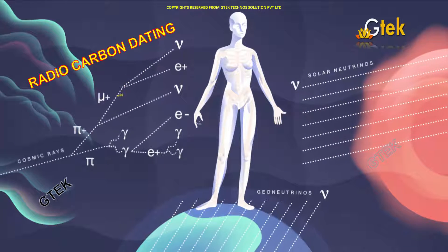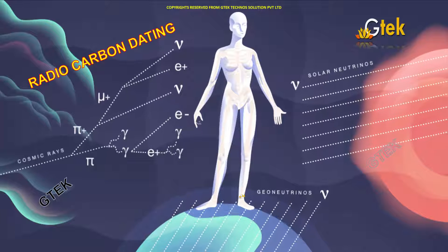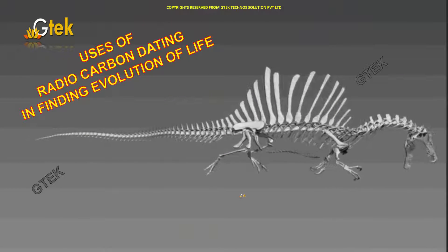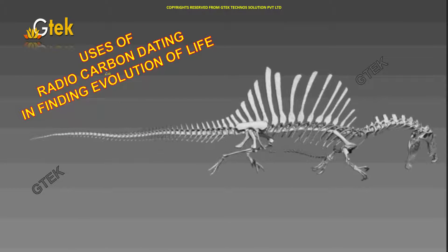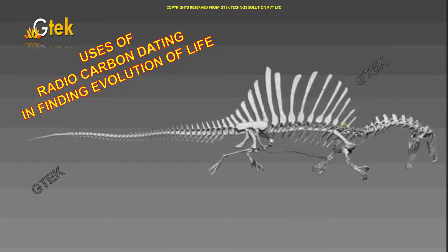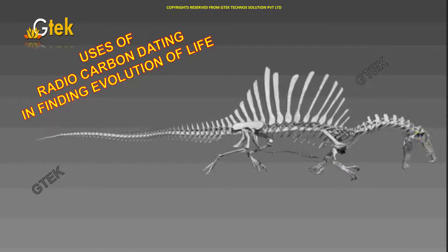Radiocarbon dating is used to identify the age of an object, human, bone, or anything. This is a typical example: the use of radiocarbon dating in finding the evolution of life.